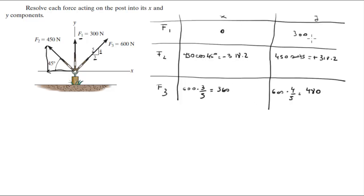So these are the X components and these are the Y components of each of the forces. If you had to write it in Cartesian vector form, something more formal, F1 would be 0i plus 300j.